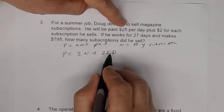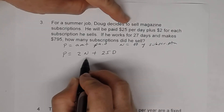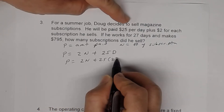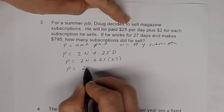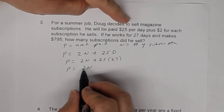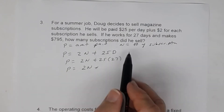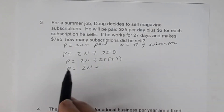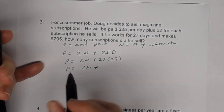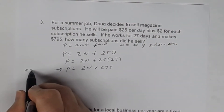We know the number of days — he worked 27 days — so I can write this a little bit better. It'll be P equals 2N plus 25 times 27. So P equals 2 times N — the number of subscriptions, each worth $2 — plus he gets paid $25 a day for 27 days. That becomes $675. So that's our linear equation: P equals 2N plus 675. That is the relationship between P and N — how much he's paid based on the number of subscriptions he sells.